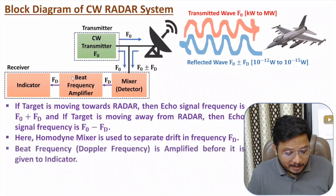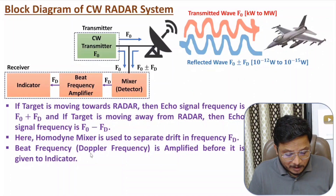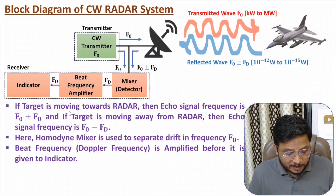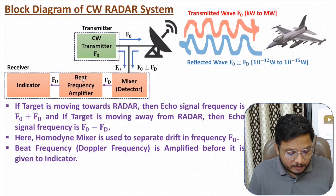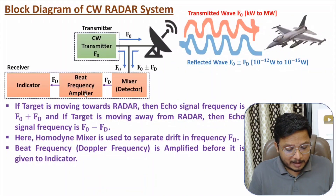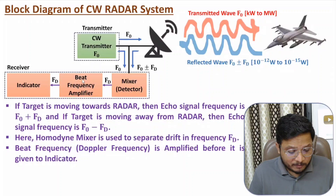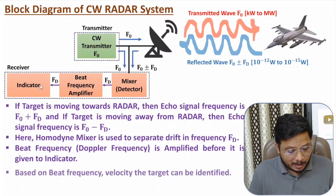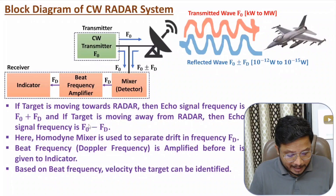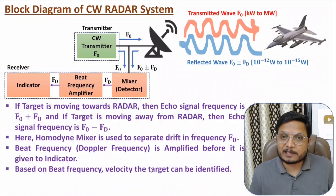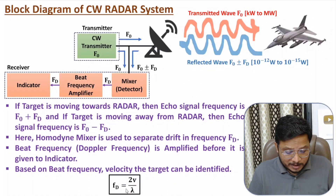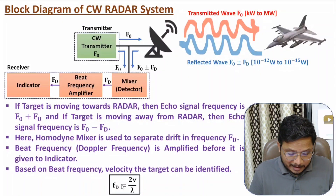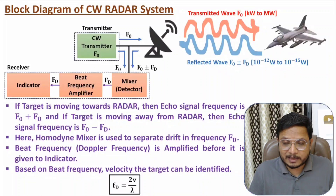After that, we have a beat frequency amplifier. Beat frequency is also referred to as Doppler frequency. Before giving the signal to the indicator, we amplify it using the beat frequency amplifier. Consider this signal is weak, so we need to amplify it before giving it to the indicator. Based on frequency drift Fd, one can identify the velocity of the target as per Doppler's effect. The equation derived is: frequency drift equals 2V divided by lambda, where V is the velocity of the target.